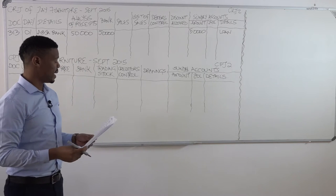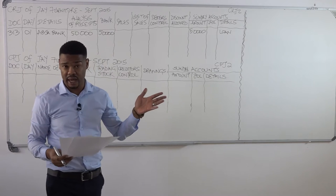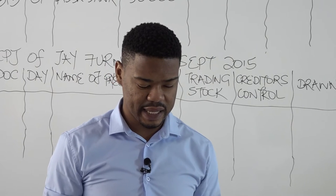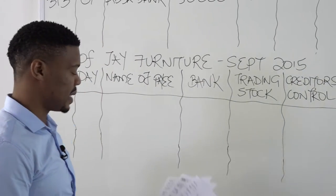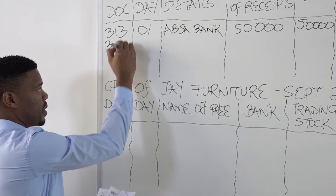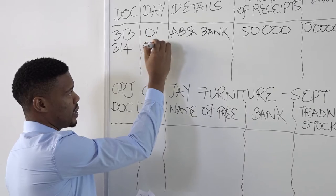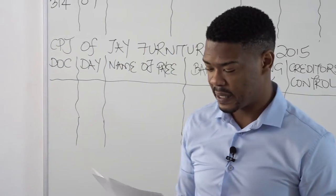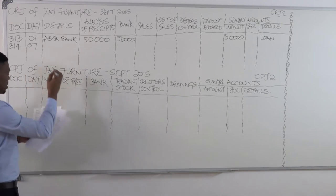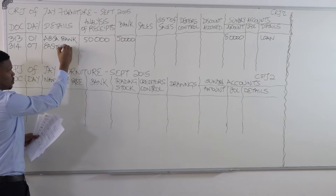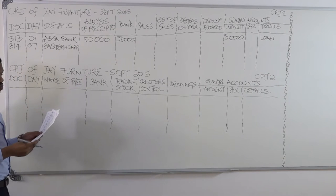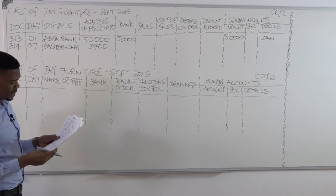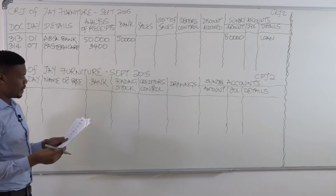I'm only going to be doing a few transactions in the CRJ, a few transactions in the CPJ and I will continue from there. The next transaction is on the 7th of the month, receipt number 314. The date is the 7th, and the transaction says rent from Eastern Carpet 3,400. Under details, enter Eastern Carpet. The amount is 3,400, which you put under analysis of receipts. And then you will take that amount to the next column.